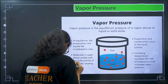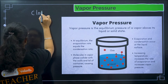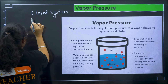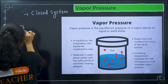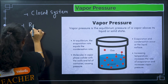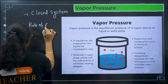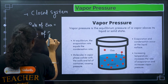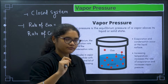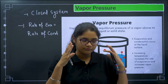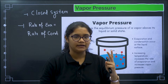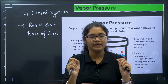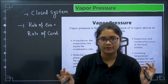Two things you need to remember: vapor pressure can be observed in a closed system, and it is observed when the rate of evaporation is equal to the rate of condensation. For vapor pressure to be created, the system should be closed and the rate of evaporation must equal the rate of condensation.